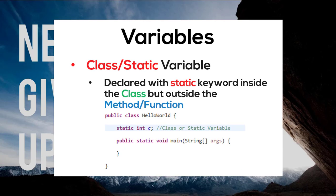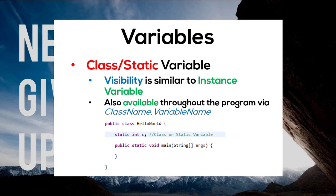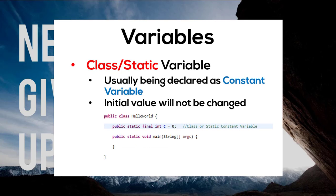Lastly we have the static variable, and they are declared within the class but outside the method as well, this time with a static keyword. Static variables are created when the program starts and destroyed when the program stops. The visibility of a static variable is quite similar to instance variables. However, static variables declared public can also be available throughout the program by calling the variable together with the class name. Usually static variables will be declared as constants using the final keyword, which means the initial value assigned will not be changed.